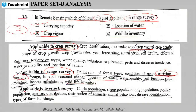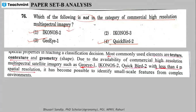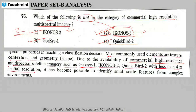Question 76: which of the following is not in the category of commercial high-resolution multispectral images? IKONOS 2, JOI First, and QuickBird 2 are true high-resolution multispectral images. The correct answer is IKONOS 3, which is not a valid commercial satellite. These satellites have a spatial resolution of less than 4 meters.